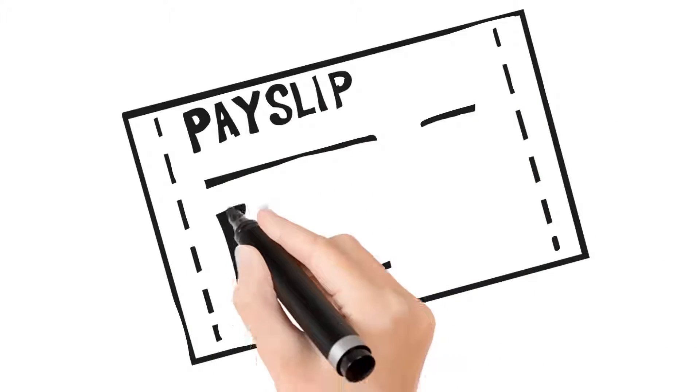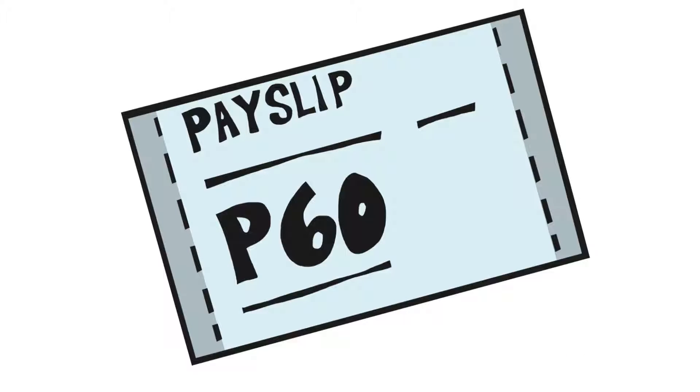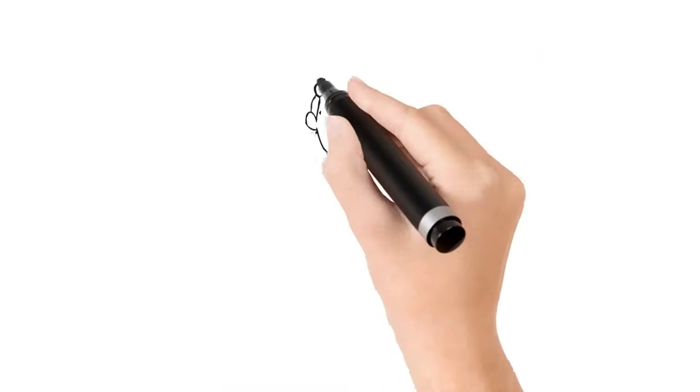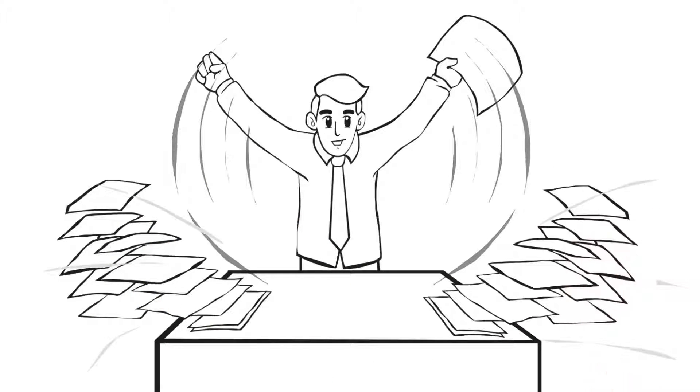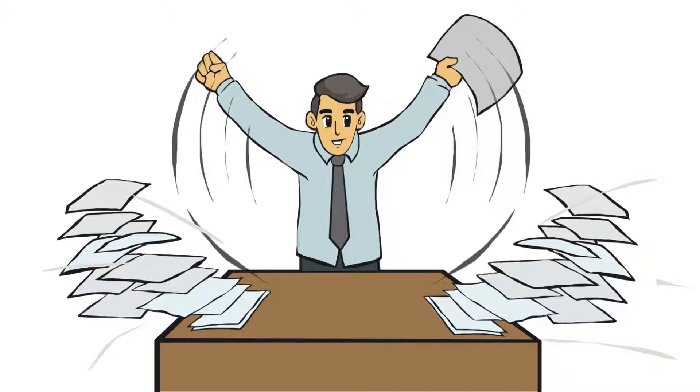It means they receive one salary payment and one payslip at the end of each week, and one P60 at the end of the year. There is far less hassle, paperwork, and administration when you are employed by one umbrella company.